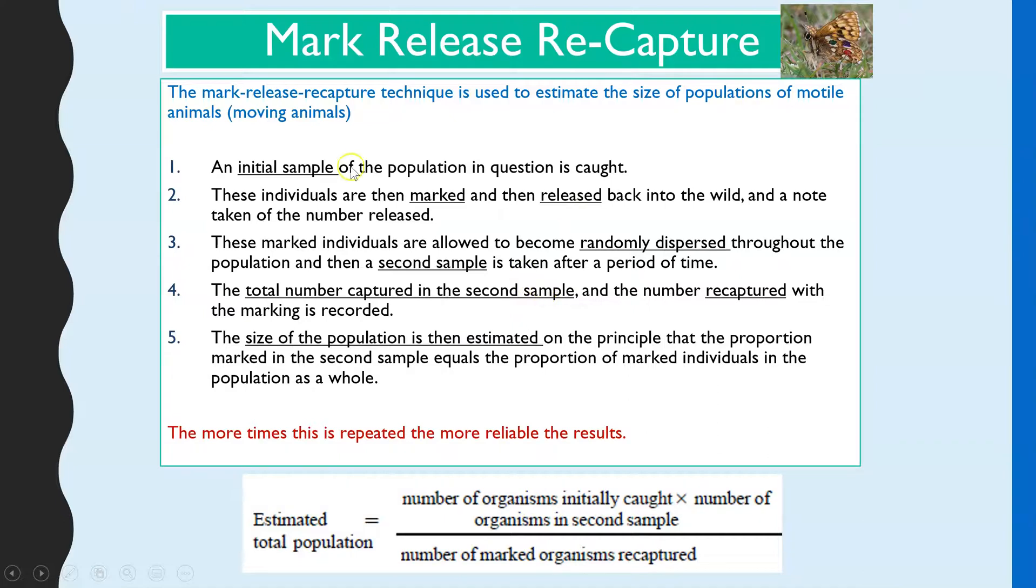It's the method you'd use to sample the size of a population of motile organisms, so to estimate how many individuals you have in one population for a particular species of moving animals.